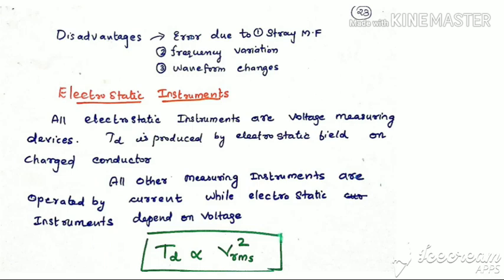There is another type called electrostatic instruments. All electrostatic instruments are voltage measuring devices. Torque TD is produced by electrostatic field and charged conductors. All other measuring instruments are operated by current, whereas electrostatic instruments depend on voltage. In electrostatic instruments, deflecting torque TD is proportional to Vrms².